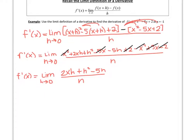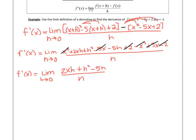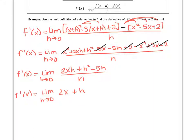We can simplify this by dividing each of the pieces by h. So f prime of x is the limit as h approaches 0 of: 2xh divided by h — those h's cancel, leaving 2x — plus h squared divided by h, which leaves one h, and then negative 5h divided by h — the h's cancel leaving negative 5.